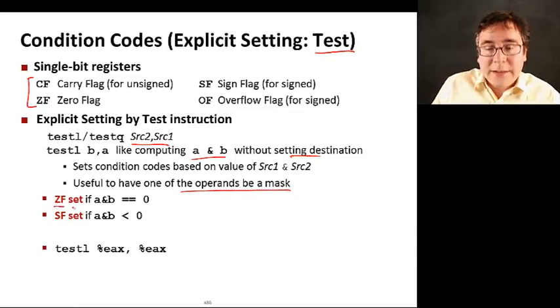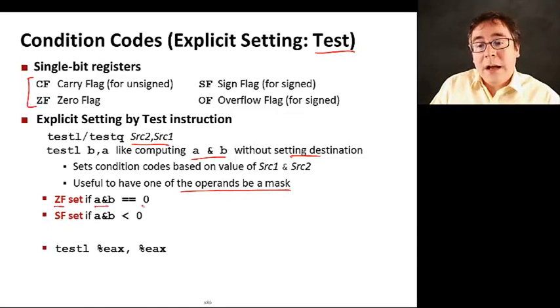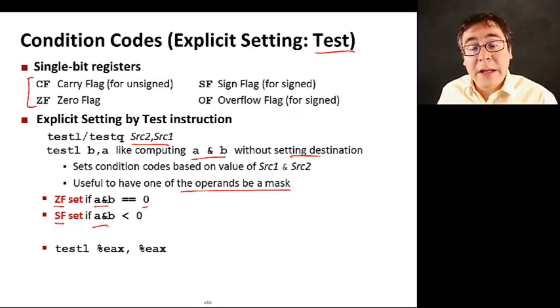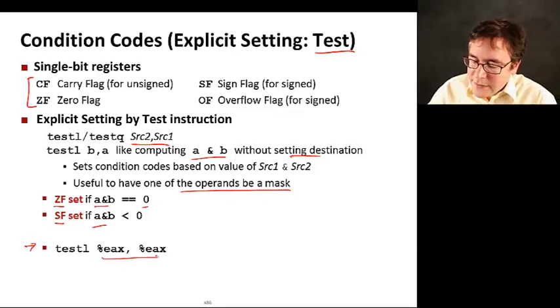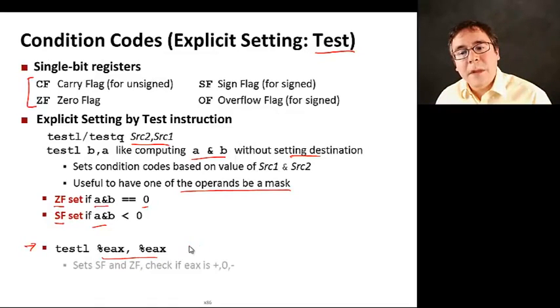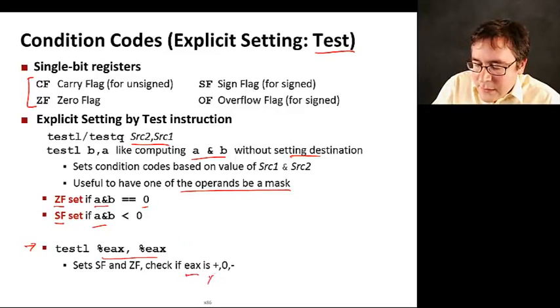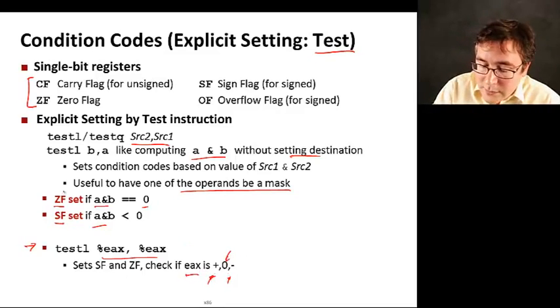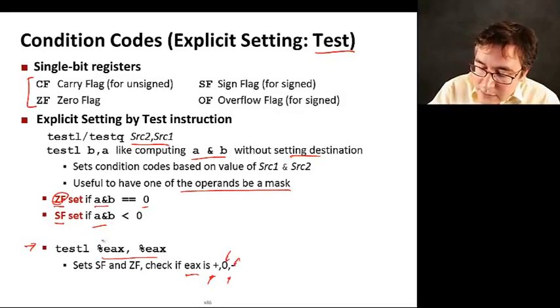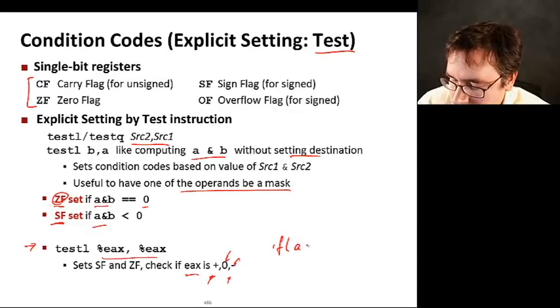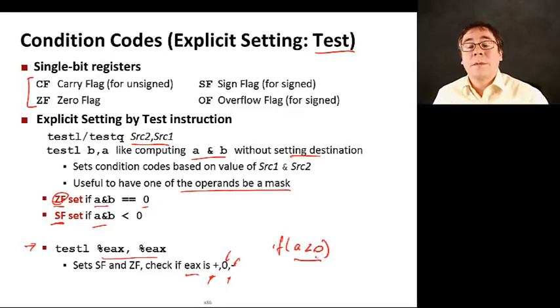So in this case here, the ZF flag is set if A bitwise AND with B happens to be zero. And SF is set if A bitwise AND with B is less than zero, if the most significant bit is set to one, essentially. So now let's look at this example here. We're doing essentially EAX bitwise AND with EAX. This is interesting because ZF is going to be set only if EAX is zero. So essentially, just checking whether EAX is positive, negative, or zero. If it's zero, the ZF bit's going to be set. If it's negative, the SF bit's going to be set. So that's going to be useful when you have conditions like if A less than zero. This could be implemented with a test instruction.